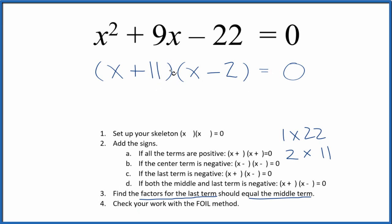That way I'll have 11 times negative two. That's negative 22, but 11 plus negative two, that's the nine X. So we factored the equation x squared plus nine X minus 22.